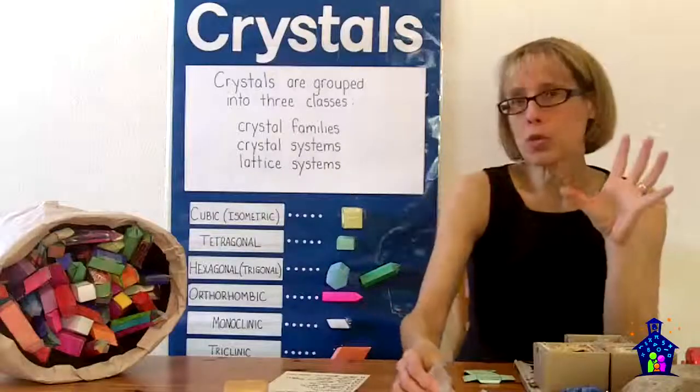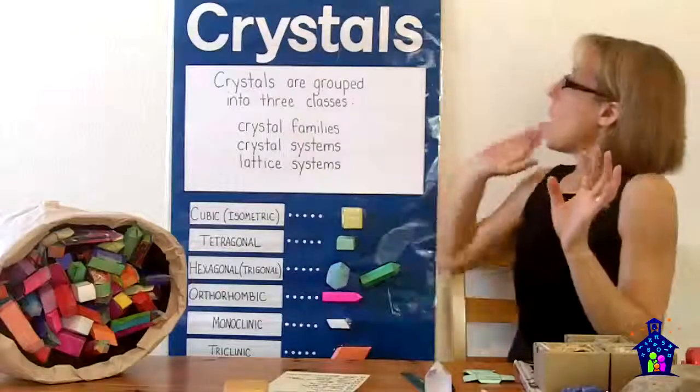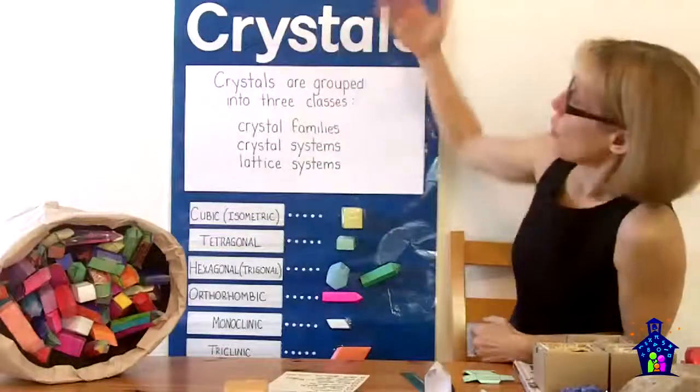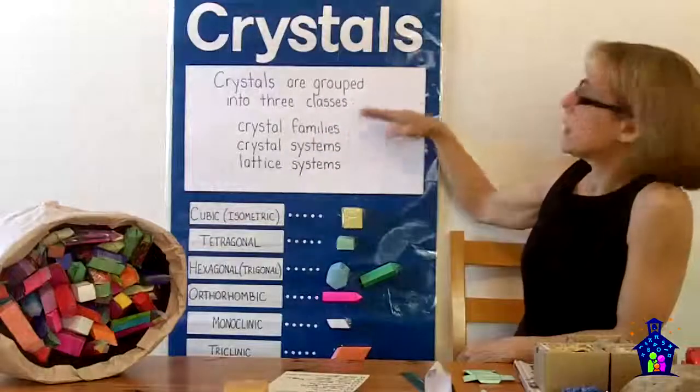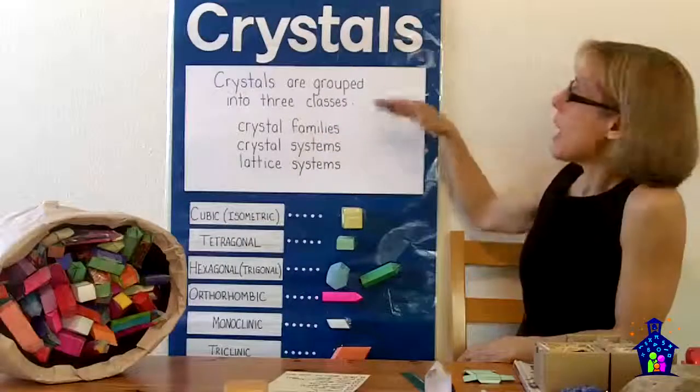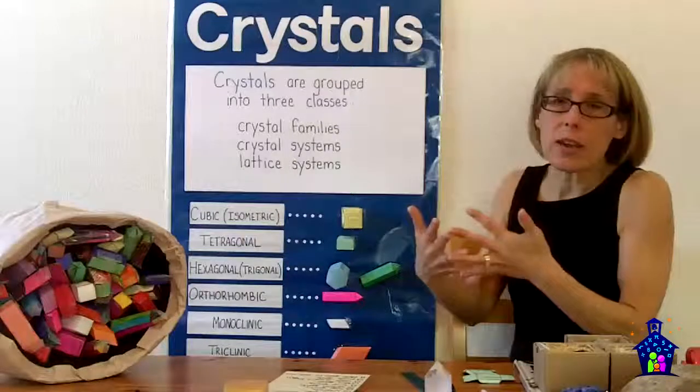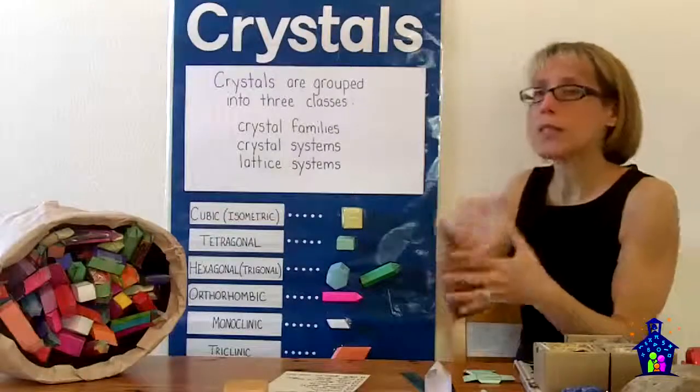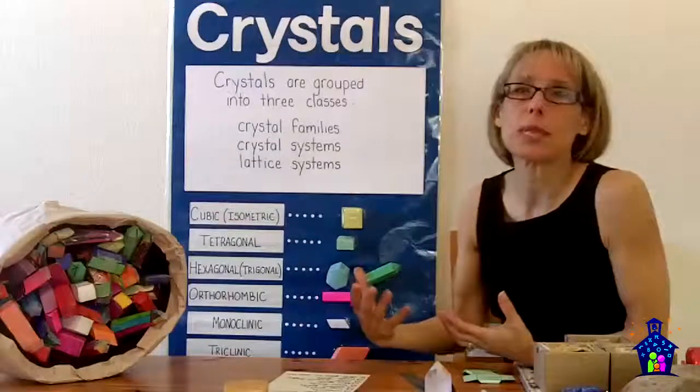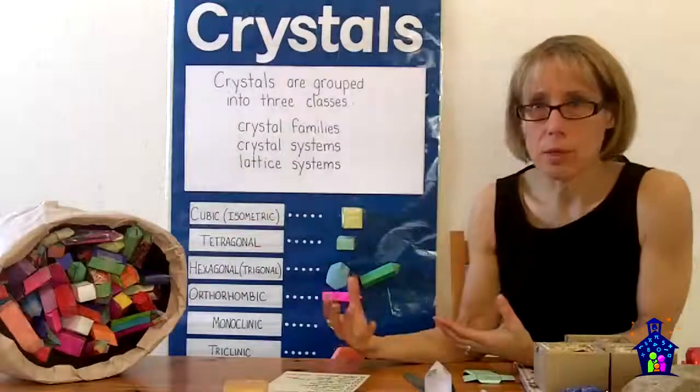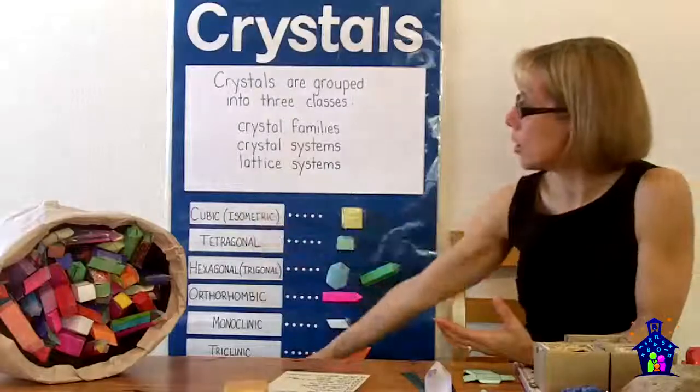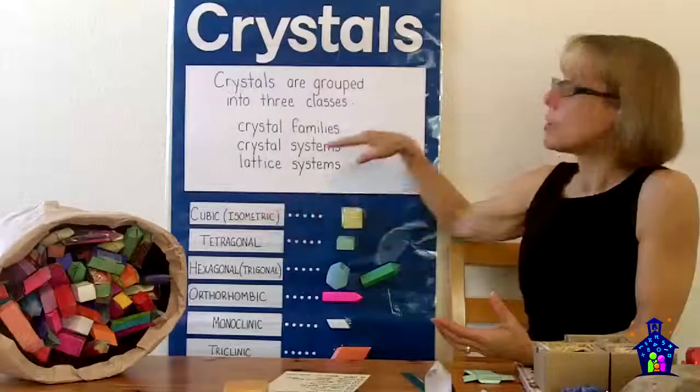So crystals fall into three groups, or they're grouped into three classes: the crystal families, crystal systems, and the lattice systems, and they're all very closely intertwined. The differences have to do with their symmetries and the way that the atoms are arranged.